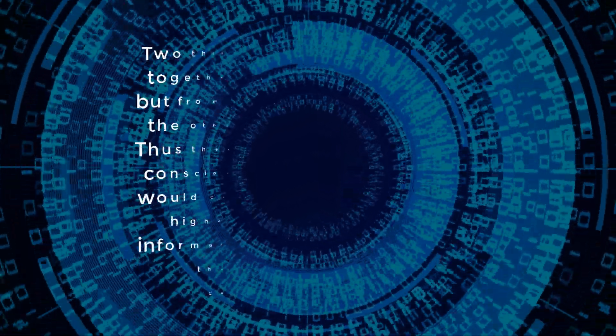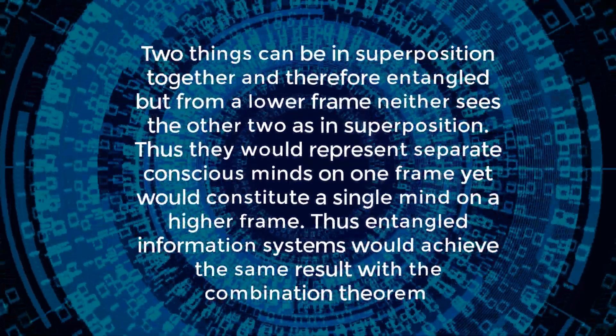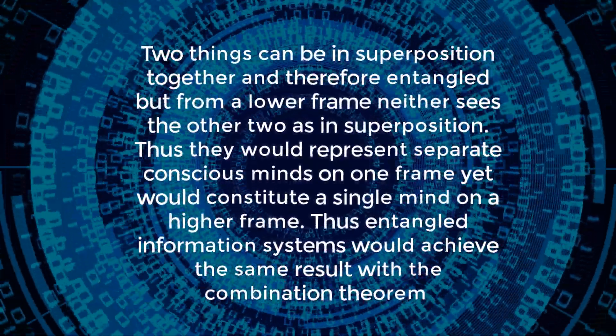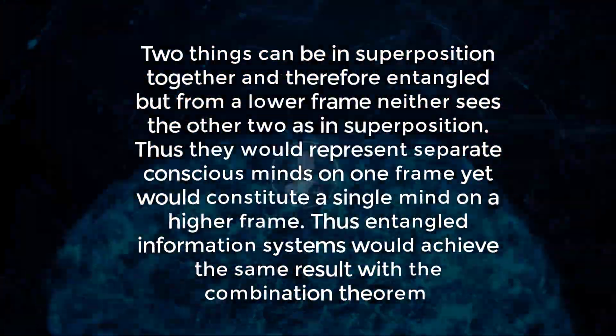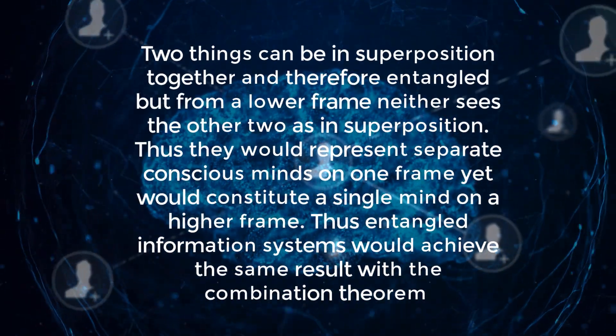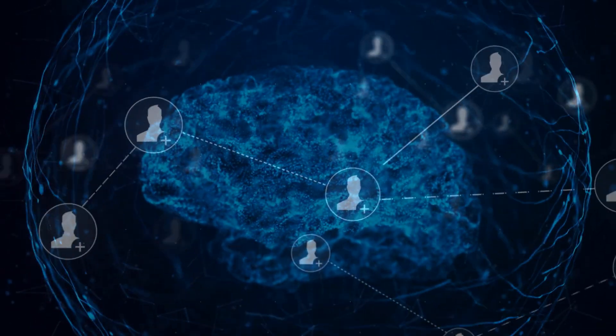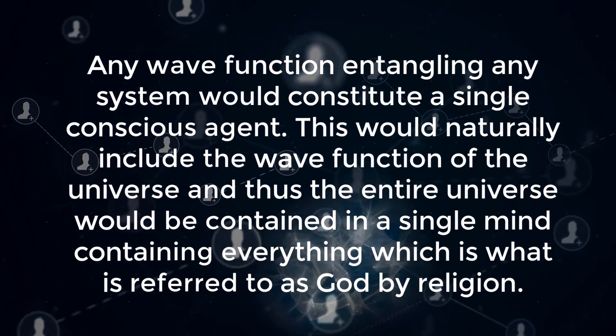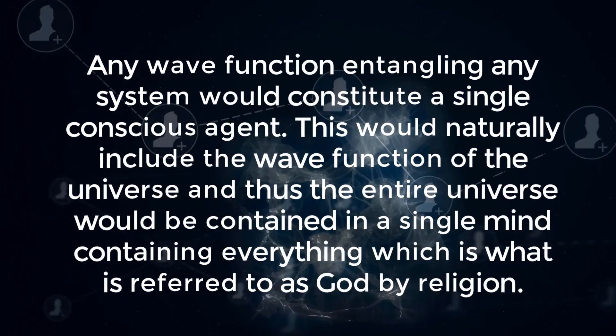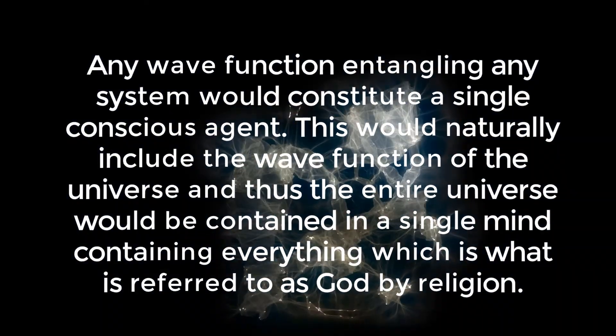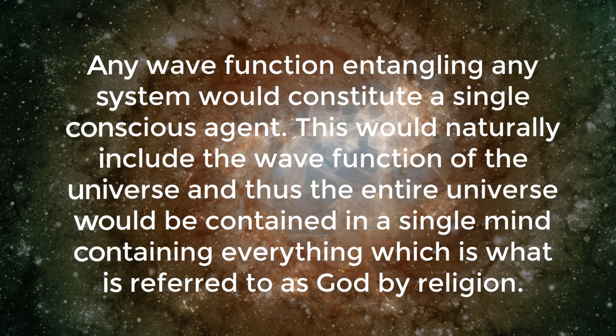So, if consciousness is identified with information, as described before, and the relational nature of quantum mechanics is brought into play, whether or not these are separate systems is irrelevant to one's frame of reference. From a higher frame, two things can be in superposition together and therefore entangled, but from a lower frame, neither sees the other two as in superposition. Thus, they would represent separate conscious minds on one frame, yet would constitute a single mind on a higher frame. Thus, entangled information systems would achieve the same result with the combination theorem. In either case, however, any wave function entangling any other system would constitute a single conscious agent. This would naturally include the wave function of the entire universe, and thus, the entire universe would be contained in a single mind containing everything, which is what is referred to as God by religion.